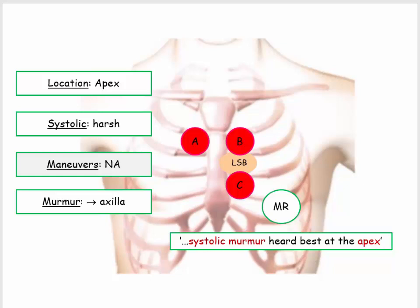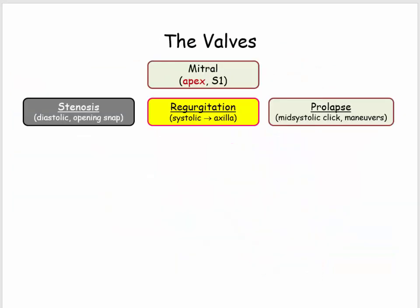I make early mention of maneuvers because these will be introduced in the upcoming video on mitral valve prolapse. As a reminder, here are the three valvular disorders we'll discuss with the mitral valve: stenosis, regurgitation, and prolapse.